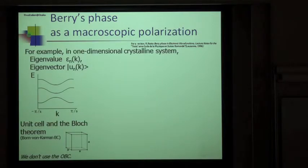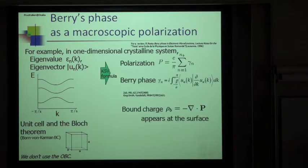For example, in the one-dimensional crystalline system, you can get some dispersion relation and corresponding eigen system with the wave number k using the Bloch theorem. Using the King-Smith boundability formula, we obtain the polarization defined by the Berry phase here. The Berry phase itself is calculated where U_nk is the eigenvector.